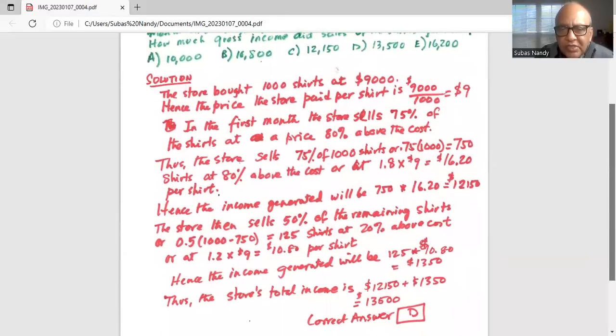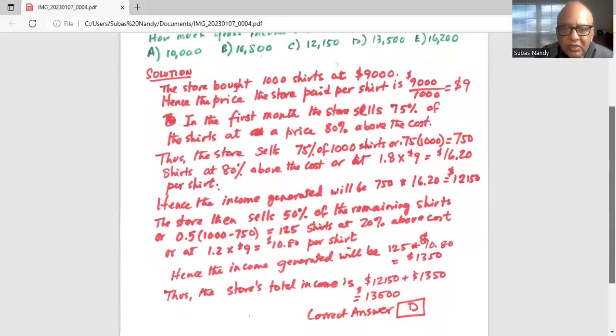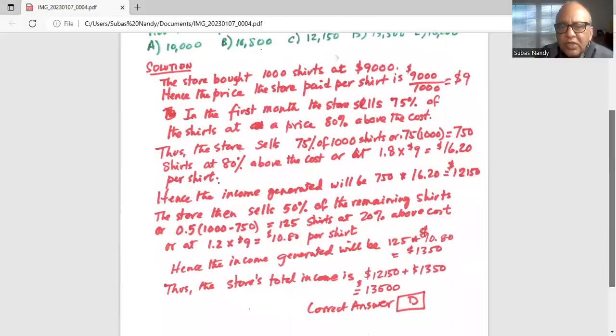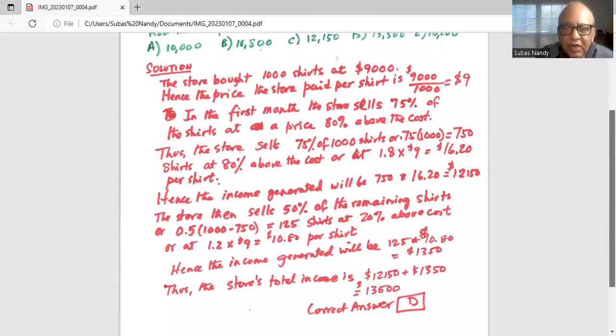The store then sells 50% of the remaining shirts, or 0.5 times (1,000 minus 750), which is 125, because it sold 750 shirts in the first month. Remaining was 250, out of which 50% were sold. So 50% of 250 is 125 shirts at 20% above cost, or at 1.2 times $9, which is $10.80 price per shirt.